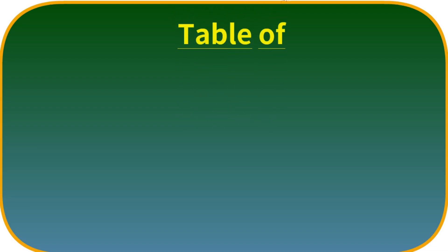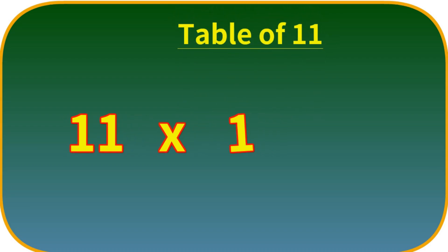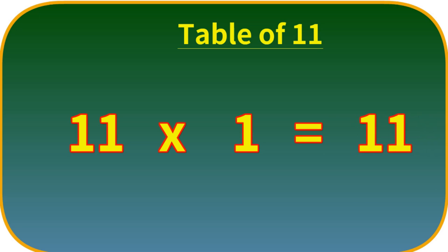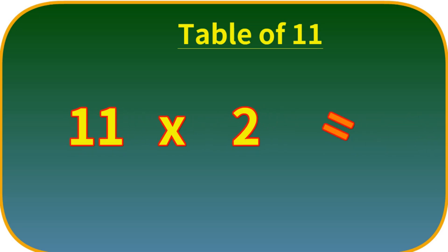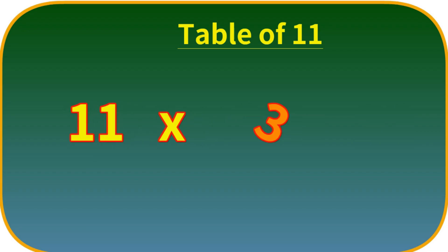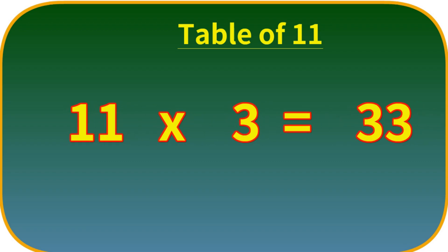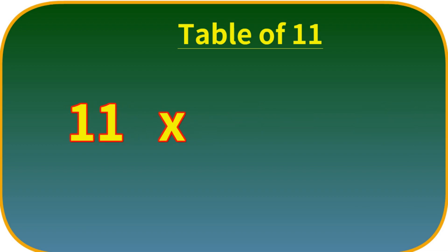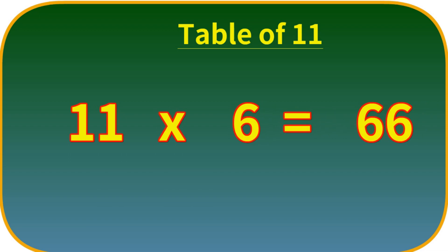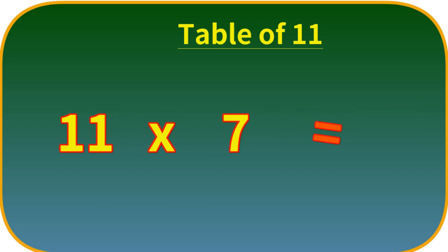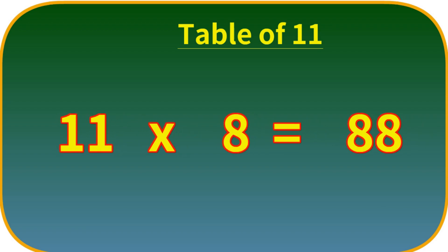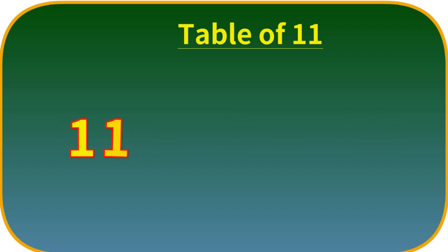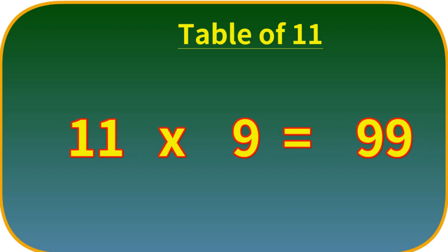Table of Eleven. Eleven ones are eleven. Eleven twos are twenty-two. Eleven threes are thirty-three. Eleven fours are forty-four. Eleven fives are fifty-five. Eleven sixes are sixty-six. Eleven sevens are seventy-seven. Eleven eights are eighty-eight. Eleven nines are ninety-nine.